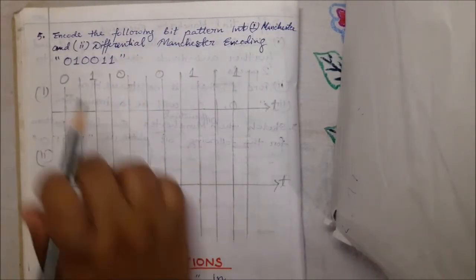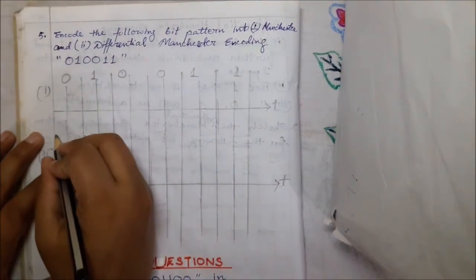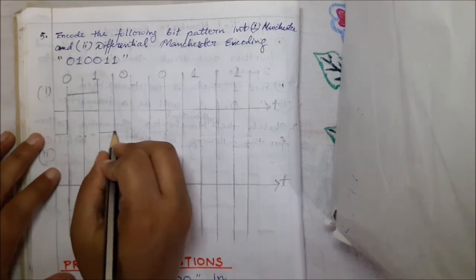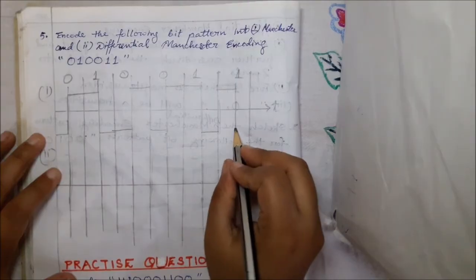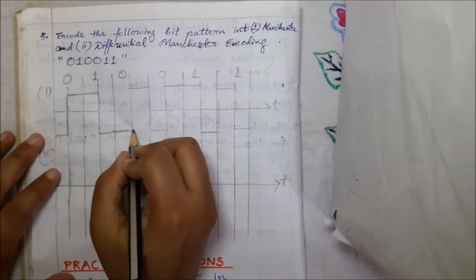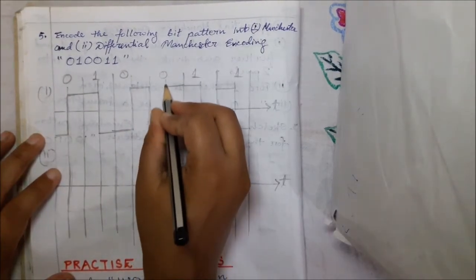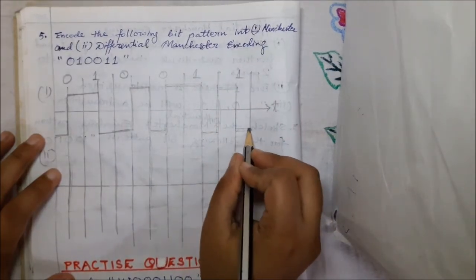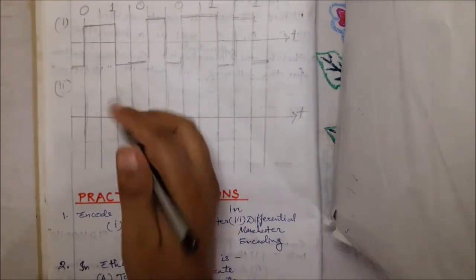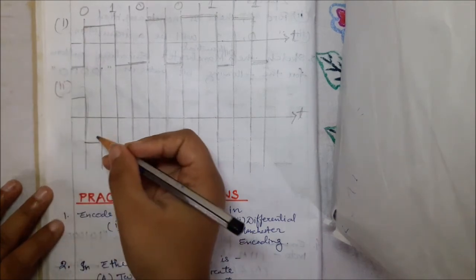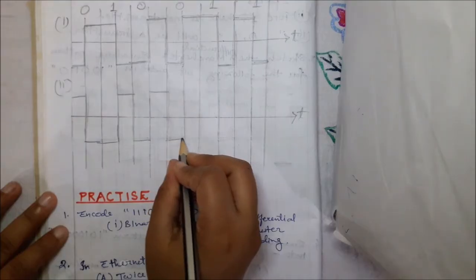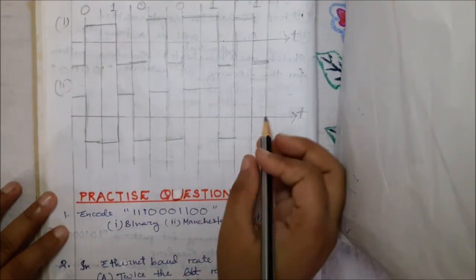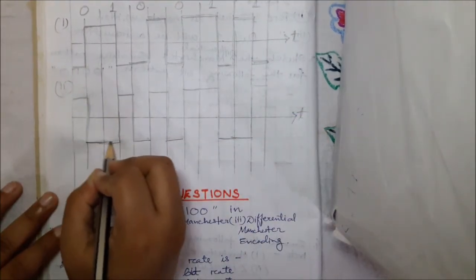Question 5: encode 01001 in Manchester and differential Manchester encoding. For Manchester: 0 is low-high, 1 is high-low, 0 is low-high, 0 is low-high, 1 is high-low — giving the Manchester signal. For differential Manchester: the first bit remains the same, then for 1 there is no transition, for 0 there is a transition, 0 has a transition, 1 has no transition — giving the final differential Manchester signal.